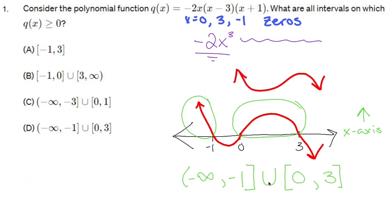So my answer is negative infinity, and you never put a bracket for either infinity because you can't include infinity. It's a concept, not a number. Come on. Negative infinity to -1, union 0 to 3. Just like that, the answer is D.